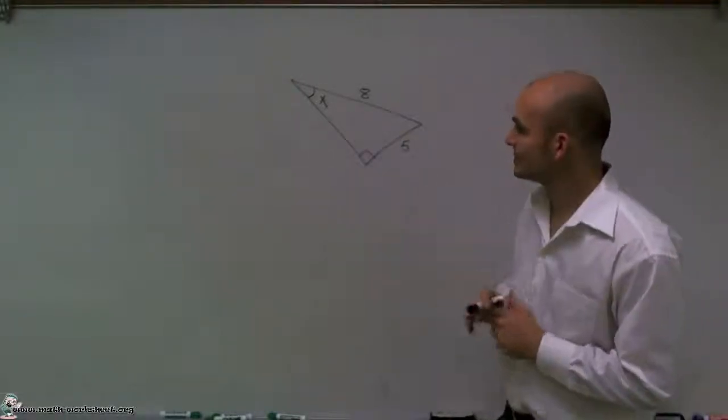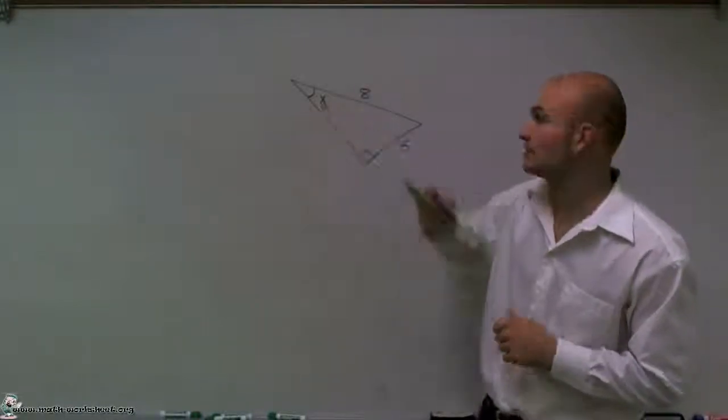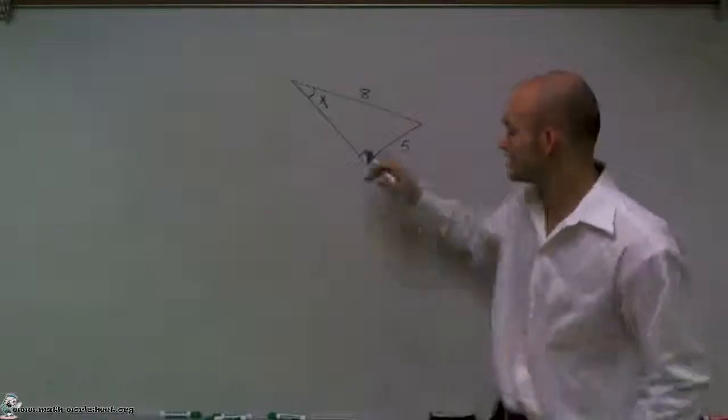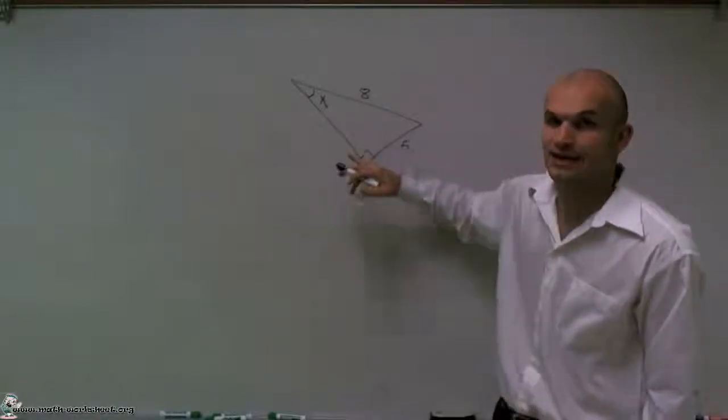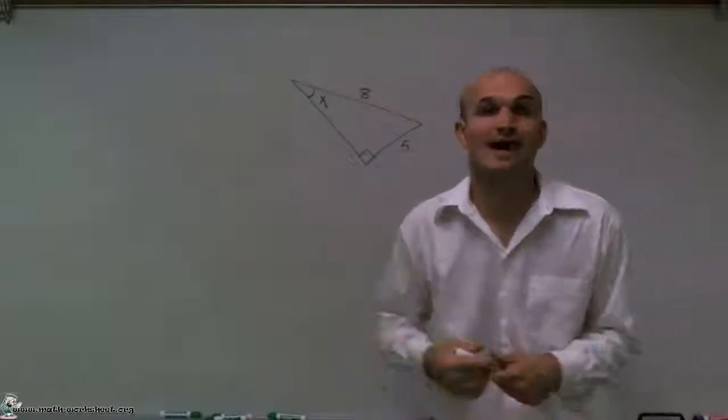So what we have here is a triangle with a missing angle measurement for an angle here, which is x. The important thing to understand about this triangle is I have this little square at this angle, and what that represents is I have a right angle. When I have a right angle, I have a right triangle.